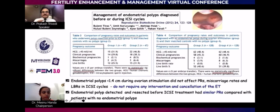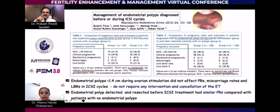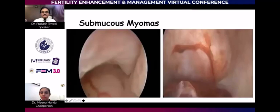If you have done ICSI and find a polyp during egg pickup, and the polyp is less than 14 mm, there is evidence to suggest that transferring the embryo does not affect the result. Even if you feel there is a polyp and want to avoid transfer, it is scientifically incorrect — you can go ahead and transfer.